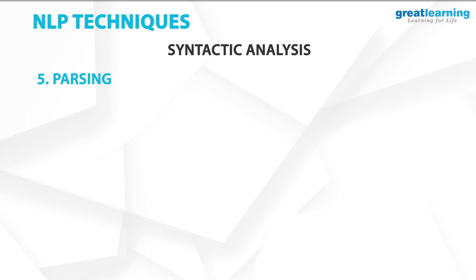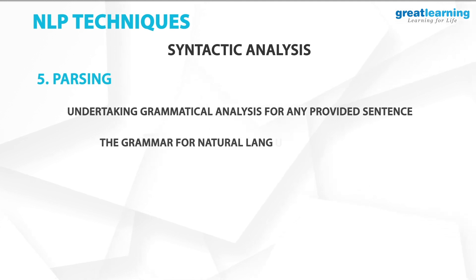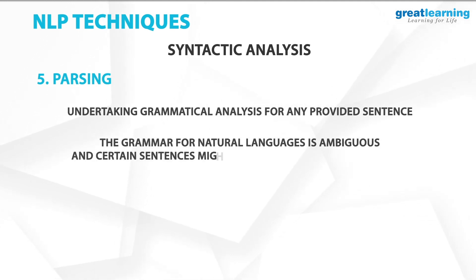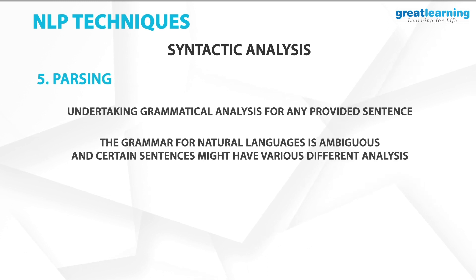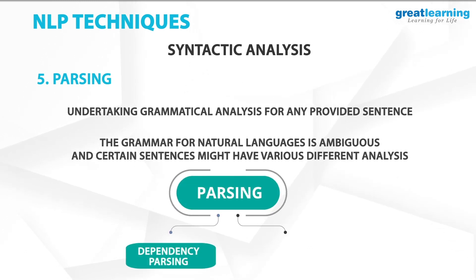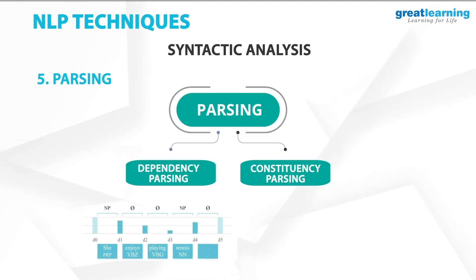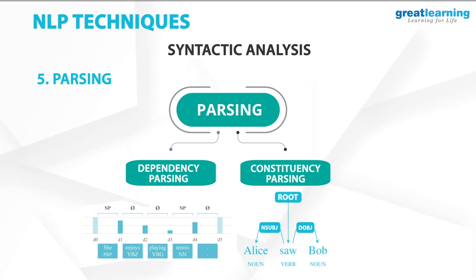The fifth technique is known as parsing. Parsing involves undertaking grammatical analysis for any provided sentence. The grammar for natural languages is ambiguous, and certain sentences might have various different analyses. There are two types of parsing: dependency parsing, which focuses on the relationship between words in a sentence, and constituency parsing, which focuses on building the parse tree or grammatical analysis.